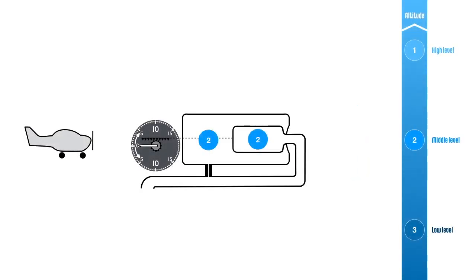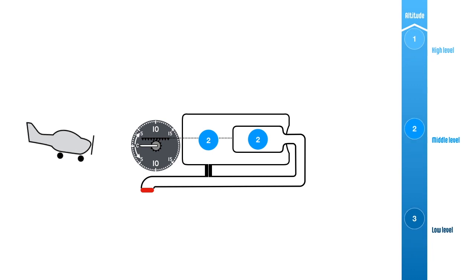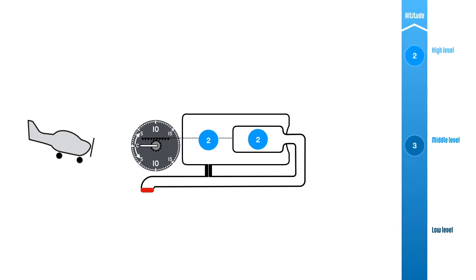Should the static port get blocked, both pressure areas inside the VSI will remain equal and the pointer will indicate zero whether the aircraft descends or climbs.